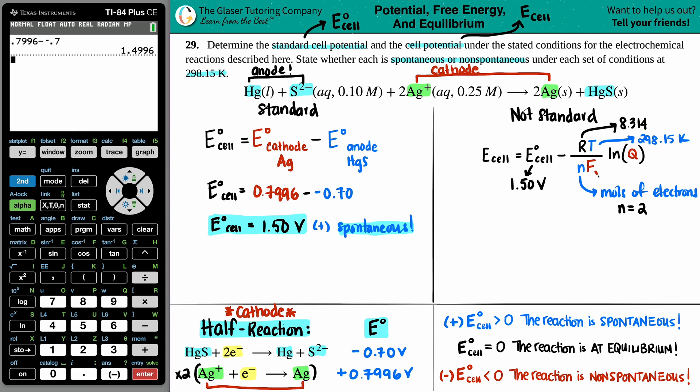Now for F, that's another constant value. This is Faraday's constant. Faraday's constant is 96,485. The units for Faraday's constant is coulombs over mole. So, we have that. Now the only thing that's left is this Q value.